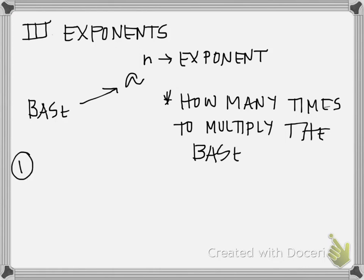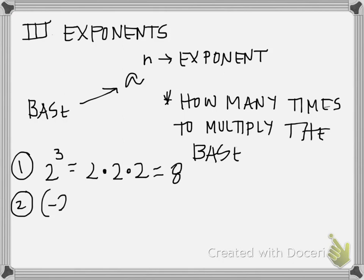So if I had two cubed, that means I'm going to take my base two and multiply it three times: two times two times two, which gives me an eight. Now here, this is a negative two cubed, so that means negative two times negative two times negative two. There are three negatives, so my answer is going to be negative. Two times two is four, four times two is eight, so it's going to be a negative eight.